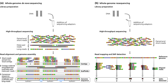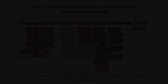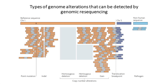Resequencing is typically performed when a reference genome sequence is available. Sequencing reads are aligned back to the reference to determine the location in the genome that a specific read best matches. Resequencing is often applied to explore genetic variation in individuals, families, and populations, particularly with respect to human genetic disease.